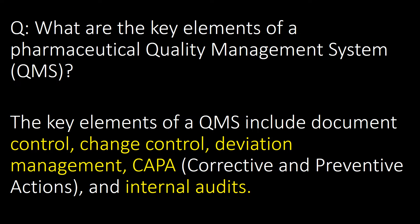This is a very important and frequently asked question: what are the key elements of a pharmaceutical quality management system (QMS)? The key elements of a QMS include document control, change control, deviation management, CAPA (corrective and preventive actions), and internal audits.